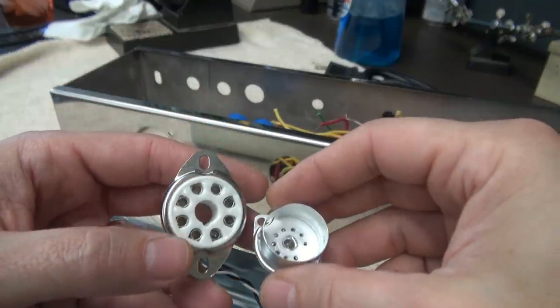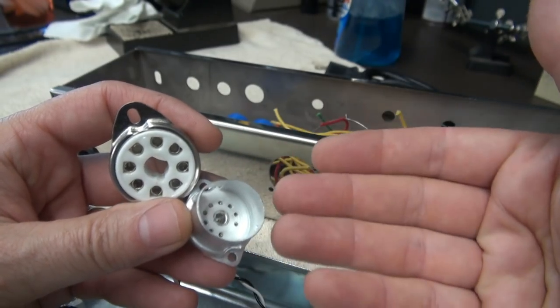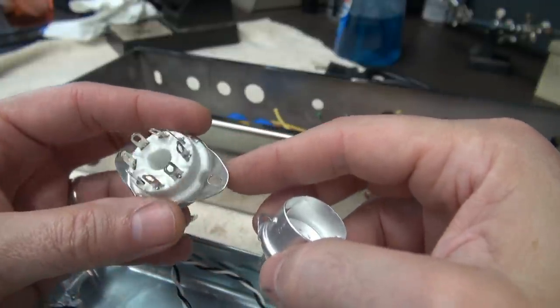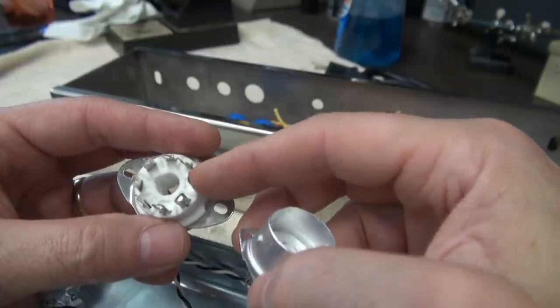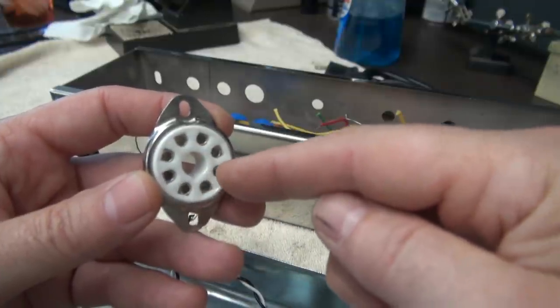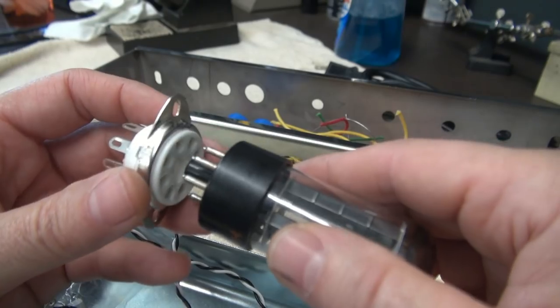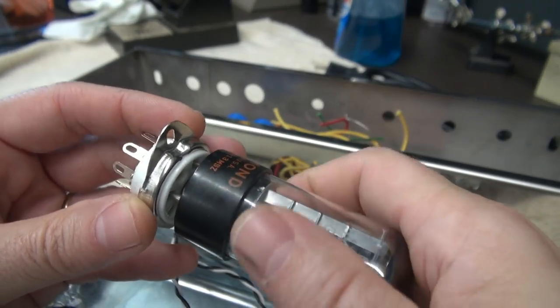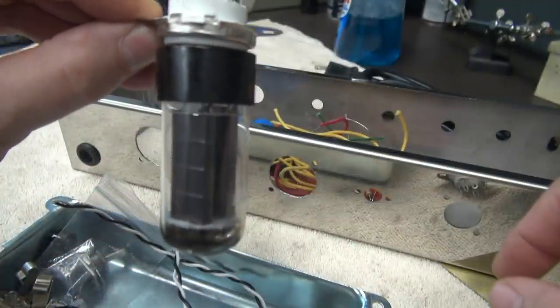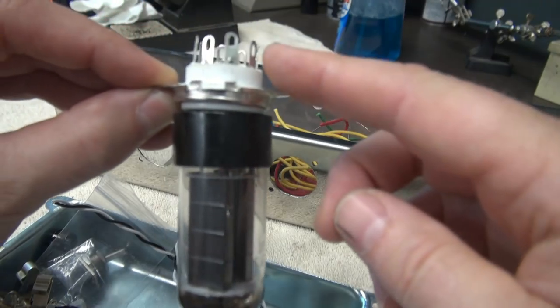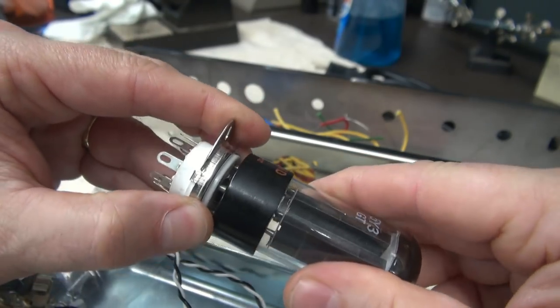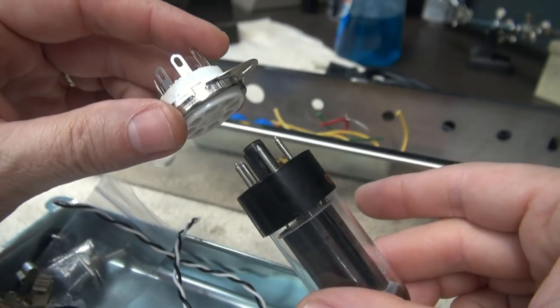The first thing I want to comment on are the tube sockets. Here's the sockets that came with the amp, Chinese-made. The metal quality is not the greatest. What happens with these things is the tube pins start losing strength and do not retain the tube properly. Imagine this hanging upside down in your amp. When these lose strength and you get vibration, these eventually loosen up and fall right out.